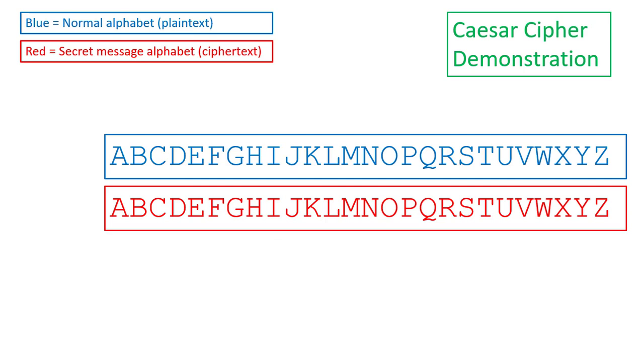To demonstrate, we have two alphabets. The blue alphabet is the normal alphabet, also known as plain text. The red alphabet is our secret message alphabet, also known as cipher text.